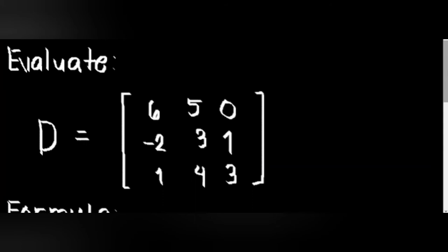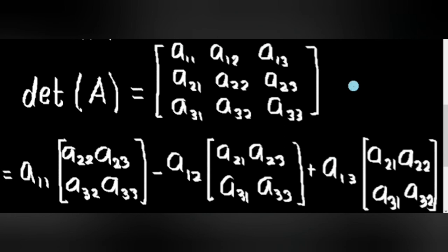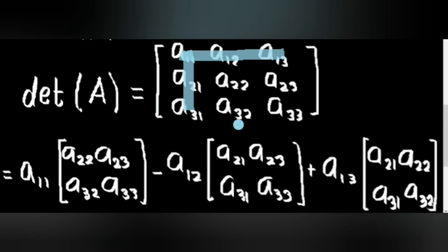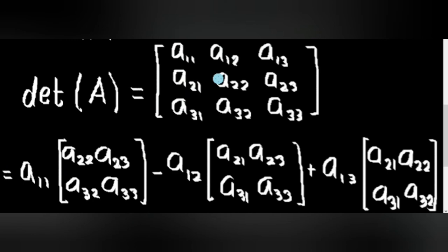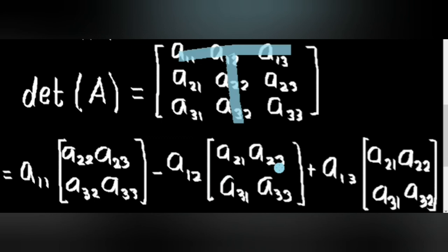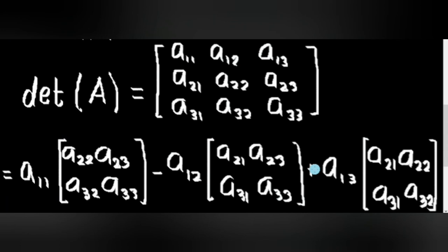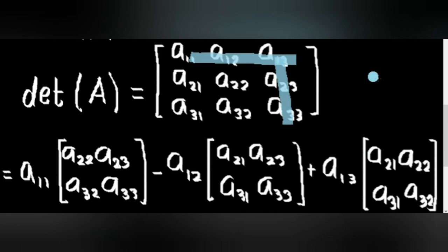In solving a determinant of a 3 by 3 matrix, we have a formula. The first thing we need to do is identify the number in the first row, first column — in this case, A sub 1,1 — then cover the rows and columns it occupies, multiplying this number to the remaining elements: A sub 1,1 times (A sub 2,2 times A sub 3,3 minus A sub 2,3 times A sub 3,2). Minus A sub 1,2 times (A sub 2,1 times A sub 3,3 minus A sub 2,3 times A sub 3,1). Plus A sub 1,3 times (A sub 2,1 times A sub 3,2 minus A sub 2,2 times A sub 3,1). This is the formula for solving a determinant of a 3 by 3 matrix.